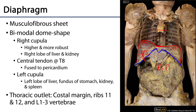Deep to the left cupula we have the left lobe of the liver. We also have the fundus of the stomach, so you can see the esophagus going in there and the fundus of the stomach right there. We'll also have adjacent to that the spleen and the left kidney and suprarenal gland in that vicinity.